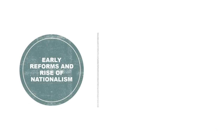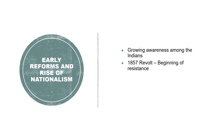The Indian National Movement began in the 19th century with early attempts at reform and the rise of nationalist sentiments. The first significant phase is the early 19th century, which saw a growing awareness among Indians about their rights. The revolt of 1857, also known as the Sepoy Mutiny, was a major event marking the beginning of organized resistance against British rule. Although it was suppressed, it laid the groundwork for future nationalist movements.